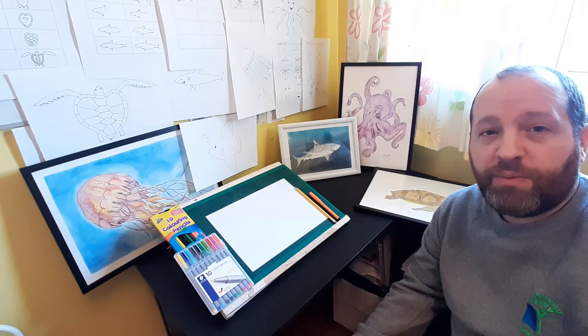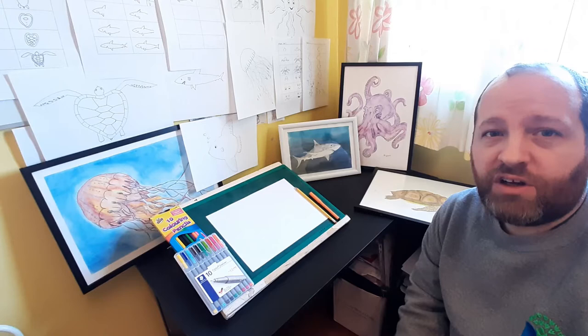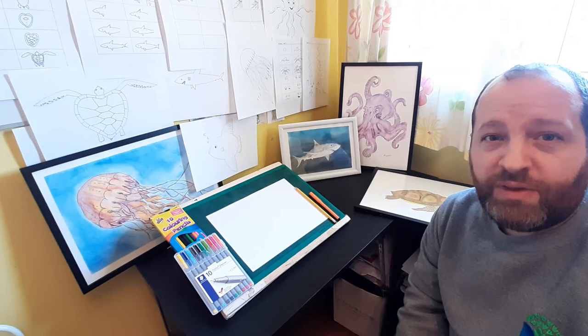Hi I'm your local Green Schools Officer Rob and for this marine week we've chosen to champion five different animals. Sunfish, the jellyfish, the octopus, the shark and the sea turtle. Join me in our draw along sessions for each of the five animals.